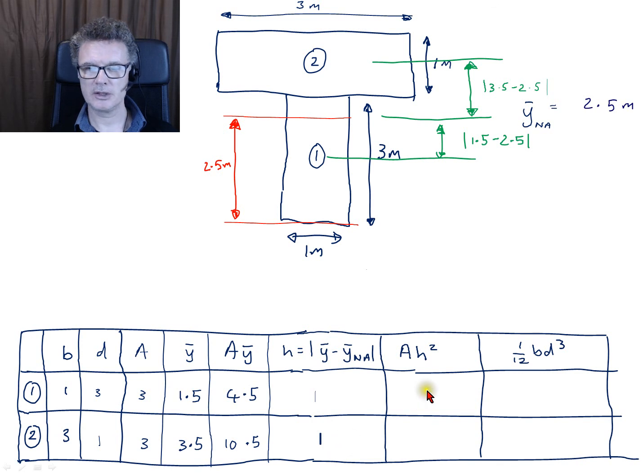Next we want to look back at our A's and multiply by h². So we can fill in this column. That's going to be 3 times 1 times 1 equals 3, and 3 times 1 times 1 equals 3. The final column, we can look for our b times d³/12 and fill in that column there.